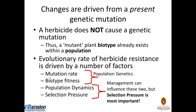Factors we can't control include the mutation rate — how often mutations allowing herbicide tolerance occur in a particular species — and biotype fitness, meaning the survivability of those mutants. These are factors of population genetics that are important in determining the speed at which resistance develops. However, population dynamics and selection pressure are areas where management does have significant influence, particularly selection pressure.